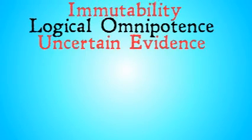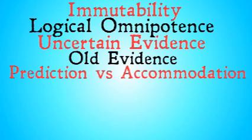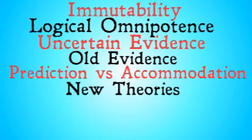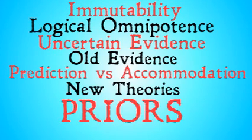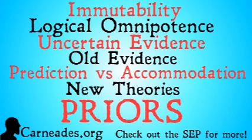So stay tuned for that. Once again, the objections are: immutability, logical omnipotence, uncertain evidence, old evidence, prediction versus accommodation, new theories, and the problem of the priors. Watch this video and more here at carneades.org. Check out the SEP for more information on all of these objections, as well as some more. And stay skeptical, everybody.